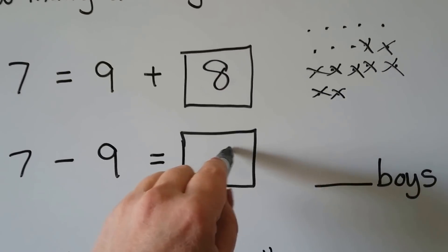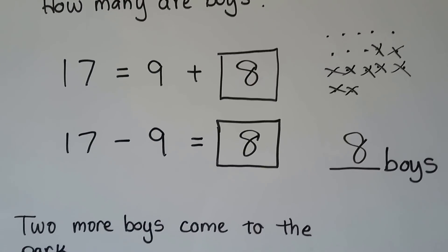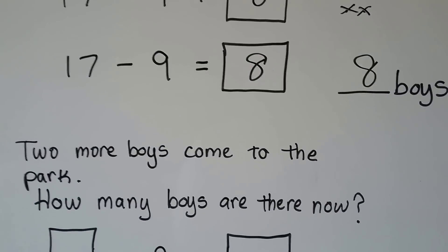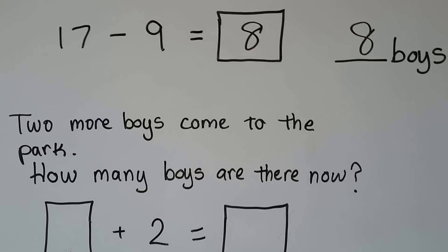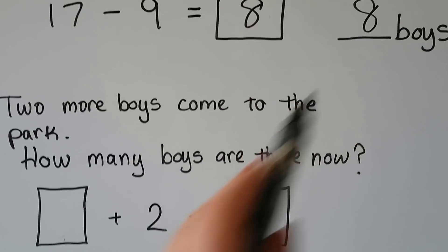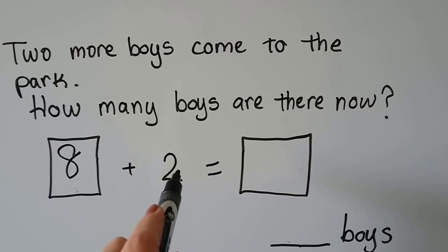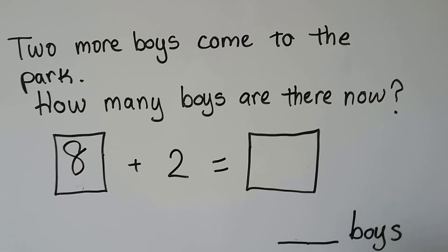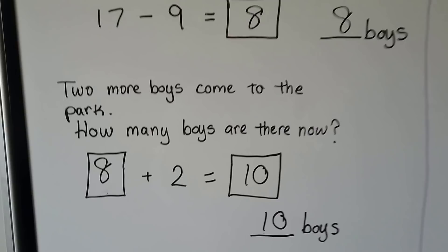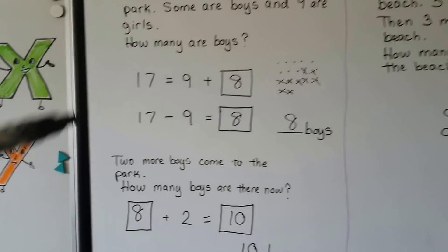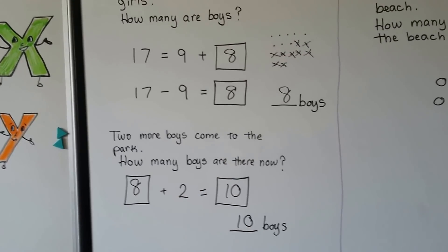There are 8 boys at the park. Now it says 2 more boys come to the park. We started with 8 and add 2 more: 8, 9, 10. There are 10 boys at the park. We solved the first part to find 8, then used that answer to help us solve the second part.